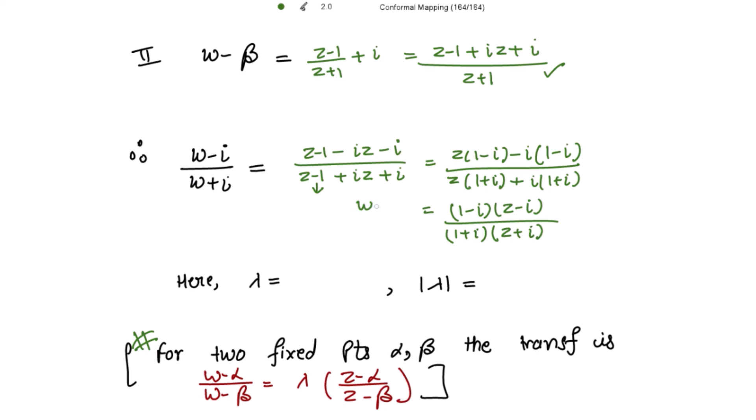So this gives w minus iota over w plus iota. If you notice, this result is similar to this transformation. Here alpha is iota, so you get w minus iota over w plus iota, that is w minus alpha over w minus beta on the left hand side. And then this is your lambda. On the right hand side again you have z minus alpha over z minus beta, that is z minus iota over z plus iota.